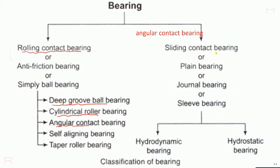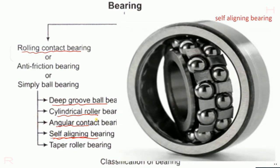The next type is the self-aligning bearing. As the name suggests, these are bearings which align by themselves. When the shaft is slightly bent or some radial movement is required, self-aligning bearings are used.